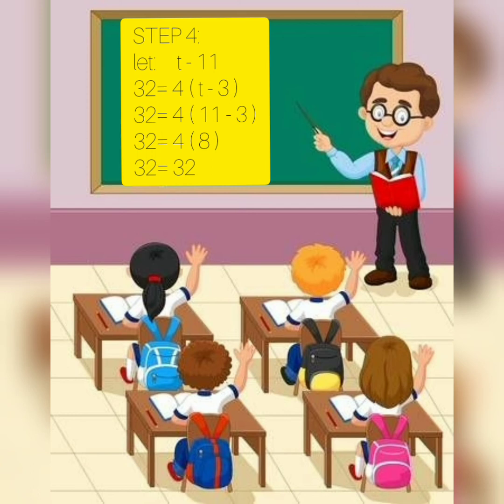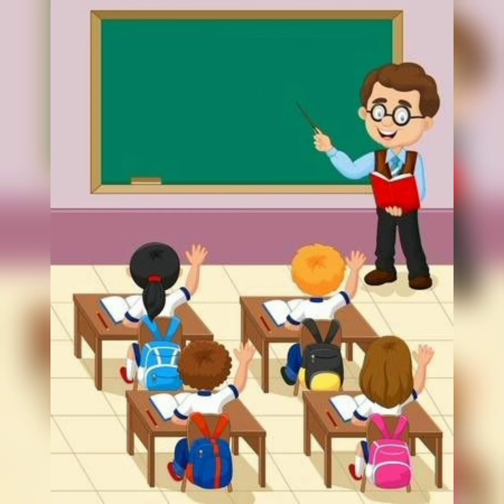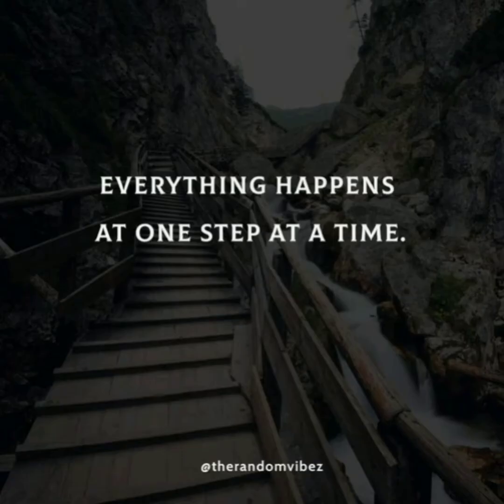Substituting: 32 equals 4 times (11 minus 3). We subtract 11 minus 3, which gives 8 inside the parenthesis. Then 4 multiplied by 8 equals 32. Both sides are equal, so our answer is correct. We can conclude that the age of Tom is 11.